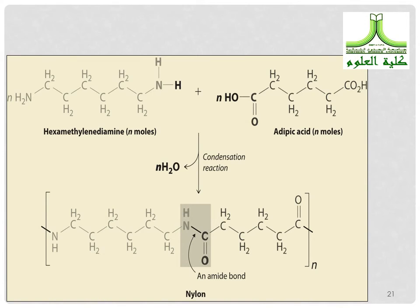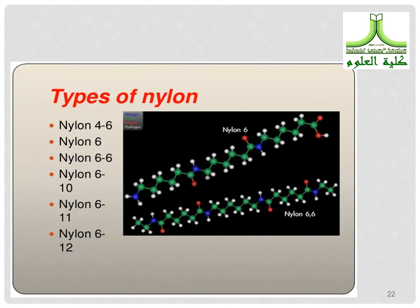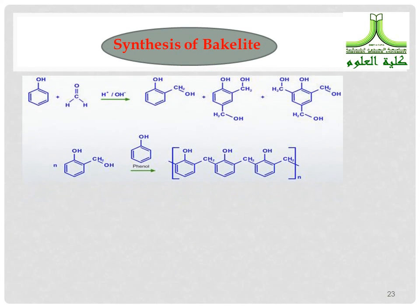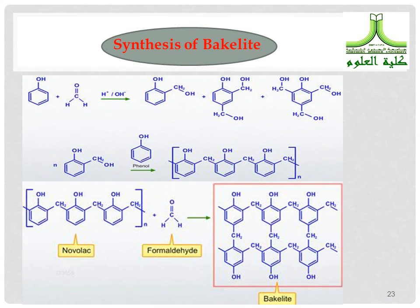Nylon is produced from hexamethylenediamine and adipic acid via condensation reaction with formation of amide bonds. There are many types of nylon, such as nylon 6 and nylon 6-6. Bakelite is synthesized from phenol and formaldehyde to form novolac, then reacting further with formaldehyde to produce bakelite.